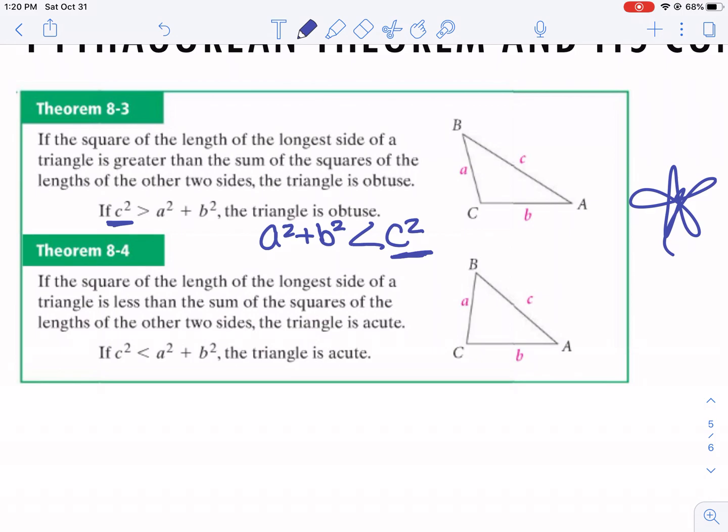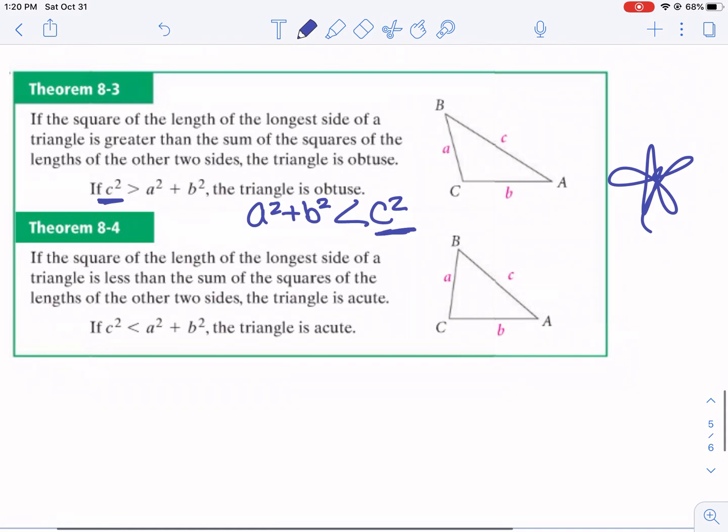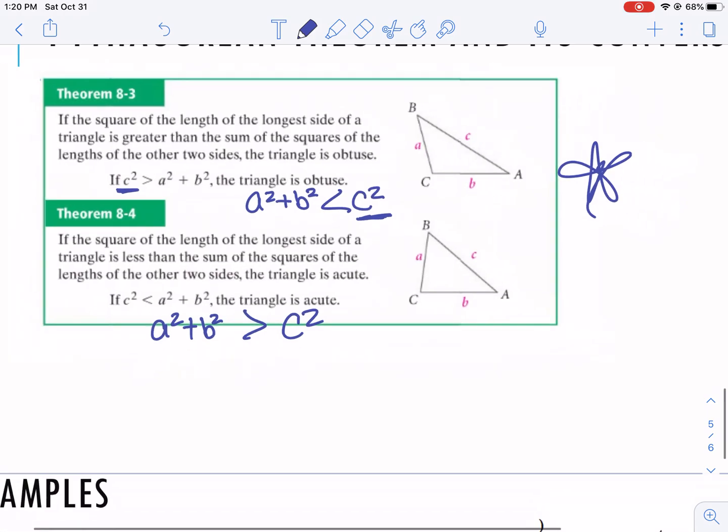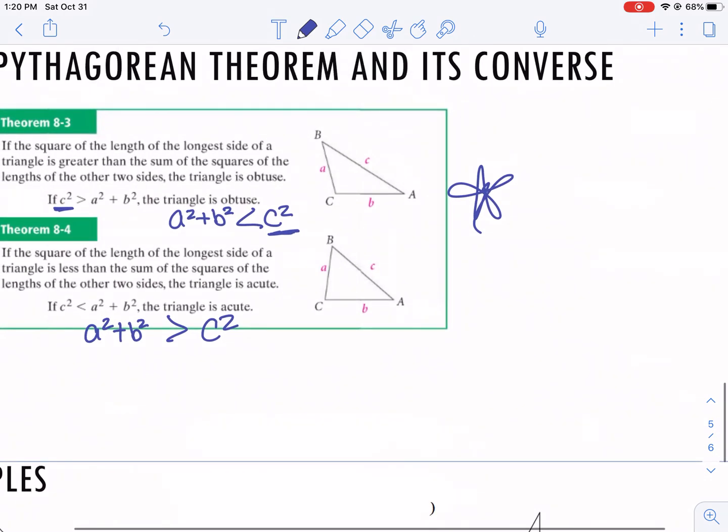The hypotenuse squared is bigger. This makes it an obtuse triangle. Whereas if I plug in my Pythagorean theorem and a squared plus b squared is bigger than c squared, it's an acute triangle. So if I were taking notes, what I strongly recommend is if we are classifying angles, we need to use this Pythagorean theorem.